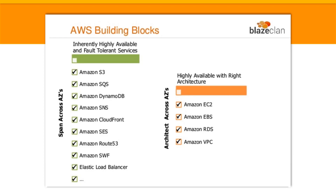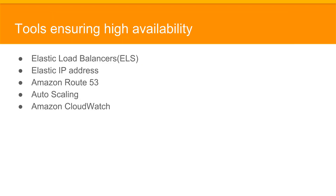Services like Amazon S3 and Amazon SNS are inherently highly available, whereas other services like Amazon EC2 and VPC can be configured to be made highly available. The tools ensuring high availability are Elastic Load Balancers, Elastic IP Addresses, Amazon Route 53, Auto Scaling, and Amazon CloudWatch.